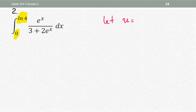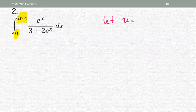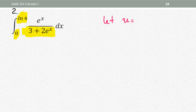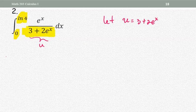The numerator is e to the x and the denominator is three plus two e to the x. The whole idea of using u-substitution is to make the problem less complicated, or put it in a more simplified form so you can find the answer conveniently. In this situation the complex form is the denominator — that's our target. If we replace the expression three plus two times e to the x with u, the denominator becomes u.